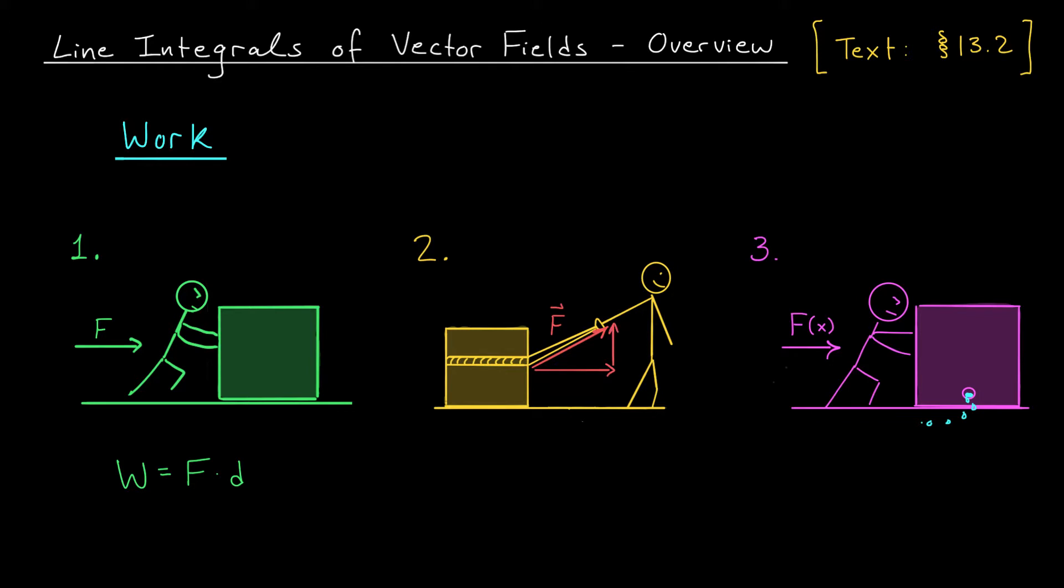So our work is no longer force times distance. I first need to find the component of the force that's actually helping me to move the box forward. I can do this using the dot product. You may have learned in physics or linear algebra that if you take the dot product of this vector with a vector pointing in this direction, you're going to get the component of the force vector that moves in this direction. So maybe it's believable that the work done on the box is the dot product of the force vector with the displacement vector, the vector pointing from our initial point to our terminal point.